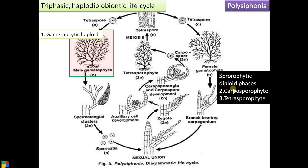Then there are two sporophytic diploid phases. The first is called the carposporophyte, which is dependent on the female gametophyte, and the second is called the tetrasporophyte, which is the independent diploid phase. Because there are three living stages in the life cycle, it is called triphasic.